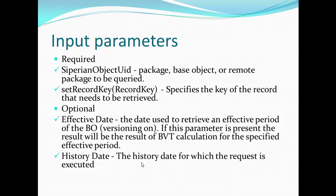Optional parameters are two: effective date and history date. Effective date is the date used to retrieve an effective period of the base object. Of course, we have to enable timeline first, and then we can use this effective date. If this parameter is present, the result will be the best version of truth calculation for the specified effective period. History date is the history date for which the request is executed.